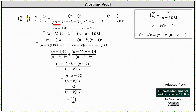Simplifying, the quantity n minus 1 minus the quantity k minus 1 is equal to n minus k, giving us n minus k factorial. I also rewrote n minus 1 minus k factorial as n minus k minus 1 factorial. The next step is to multiply the first fraction by k over k and multiply the second fraction by n minus k over n minus k.